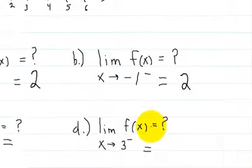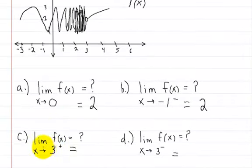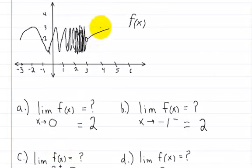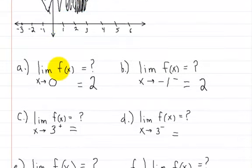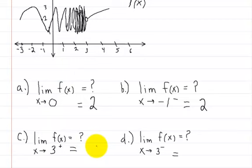So now how about C. What's the limit of f of x as x approaches three from the right? Now let's see, here we're on the right side. So here we're following it from the right to three. As we're coming over here to three from the right, we're coming to this spot right here, we're approaching two. So the answer to C is two.